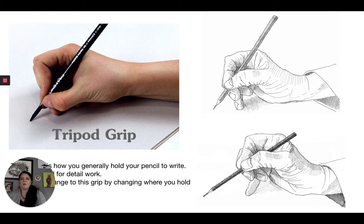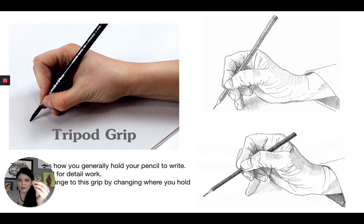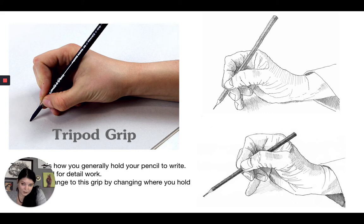The next one is tripod grip — this is our default grip, how you're taught to hold a pencil or pen in school to write. In the art world we call it tripod grip; some people call it writing grip or scribe grip. It's good for detail work, moving really just your fingers a little bit from your wrist. The thing about tripod grip is you can back up your grip to make larger gestures, and when you back up even further it turns into paintbrush grip — so it's more versatile than you might think.